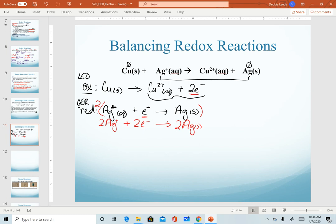Notice now my electrons cancel, and now I can write my full balanced chemical equation. 2 silver ions plus 1 copper solid will react to produce 2 silver solid plus 1 copper 2 plus ion.